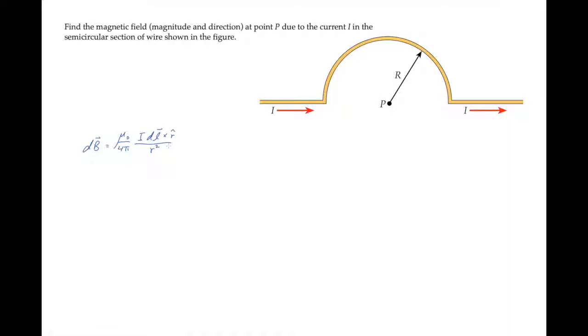The dl in this expression is a small segment of the wire in the direction of the current, and r-hat is the unit vector directed from the segment of the wire towards the field point, that's point P in our figure.